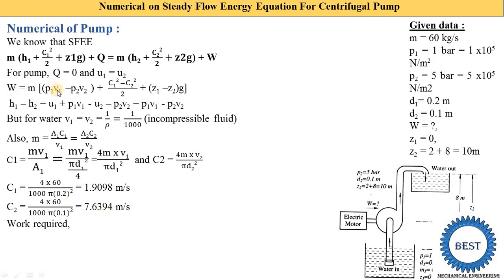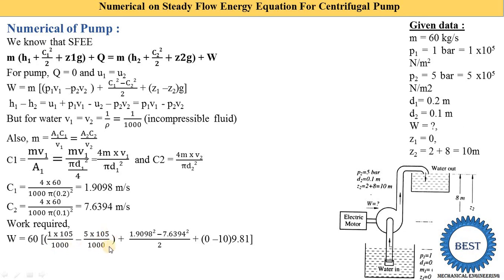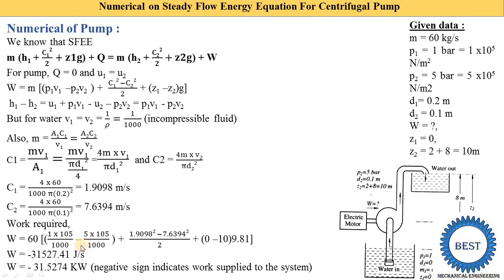Substituting all values: W = 60 × [(1×10⁵/1000 − 5×10⁵/1000) + (1.9098² − 7.6394²)/2 + (0 − 10)×9.81] = −315,274.1 J/s. The negative sign indicates work is supplied to the system. Converting: −315274.1/1000 = −31.5274 kW, meaning the motor requires approximately 31.53 kW.